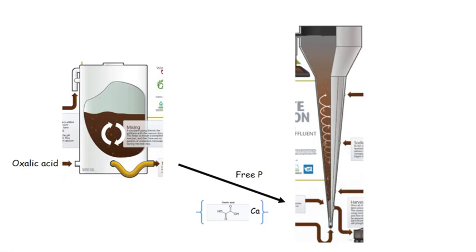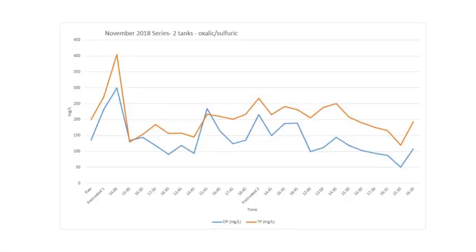What we actually found was that the calcium oxalate was not dropping out in our pre-treatment tank — it was carrying over into the cone. We think that was responsible for the lack of expected performance. Here are a couple of runs from November 2018: we ran two tanks treating about 4,000-gallon tanks, using a combination of oxalic and sulfuric acid. We're looking at milligrams per liter of ortho-P (blue line) or total-P (red line).